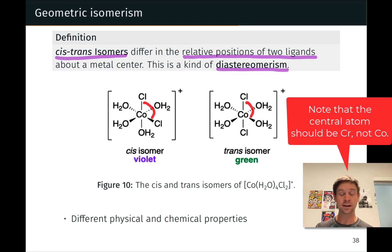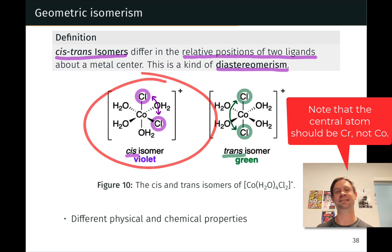So this spatial difference does give rise to differences in chemical and physical properties. For example, the cis isomer here is a violet color. The trans isomer is a green color. And having made both of these complexes, I can tell you that if you prepare the cis isomer and just let it sit, it will turn green over time. A little bit slower at low temperature,